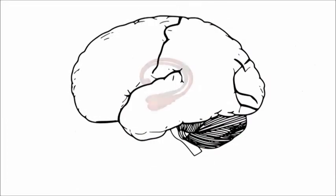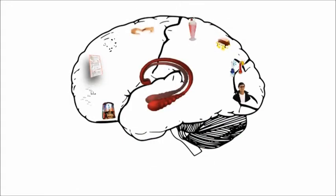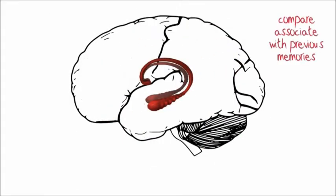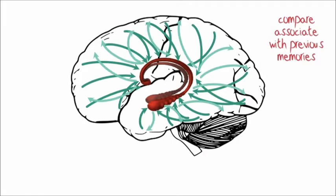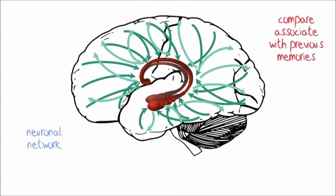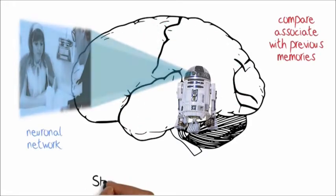These sensory memories are then combined in the hippocampus into one single experience, comparing and associating it with previously recorded ones. The hippocampus not only receives, but also sends connections to the cortex, assembling a neuronal network which operates as a kind of hologram.